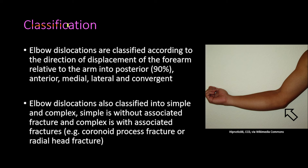Elbow dislocations are classified according to the direction of displacement of the forearm relative to the arm. The types include: posterior — the most common, occurring in 90% of cases — anterior, medial, and lateral. The forearm is displaced posteriorly in the posterior type, which is by far the most frequent.